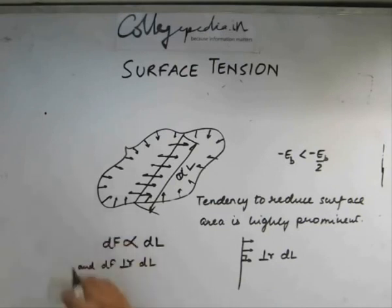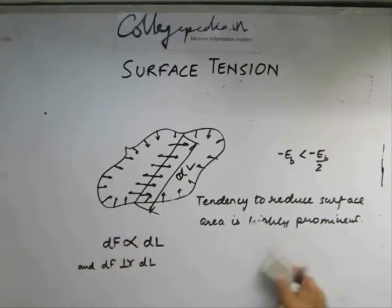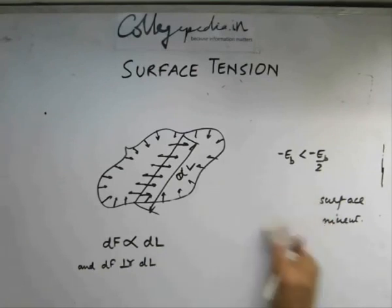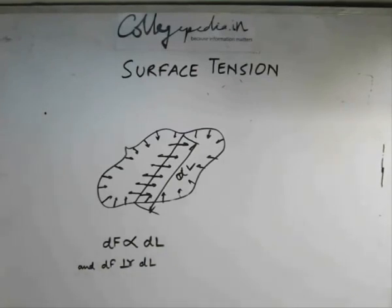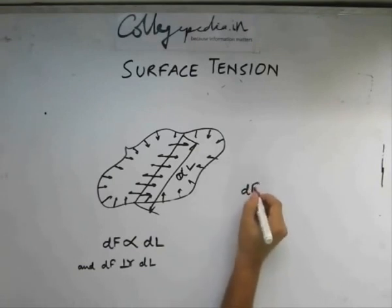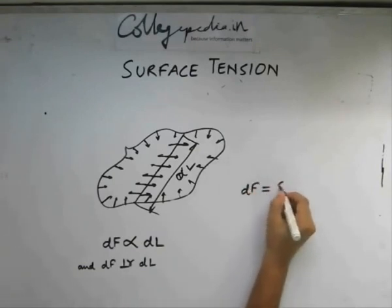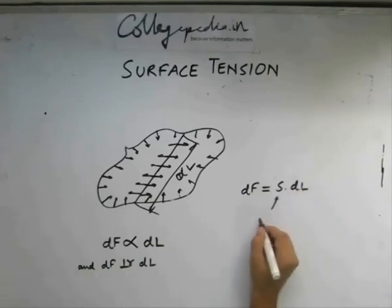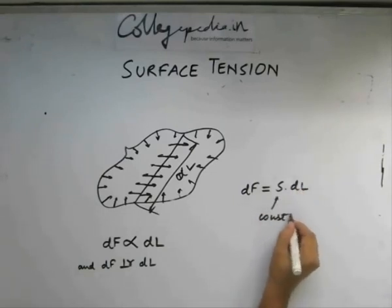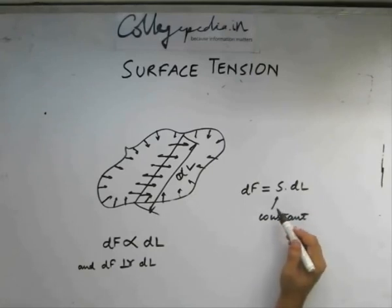Because we have a proportionality, we can remove the proportionality sign by assigning a suitable constant to the relation. So df is equal to s times dl. This constant is a property of the interface we are talking about.